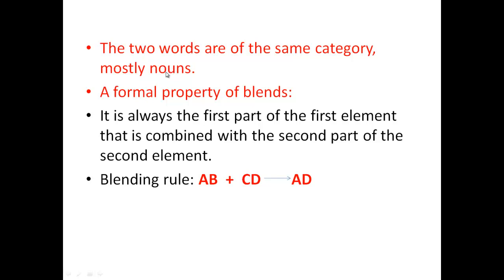We generally combine nouns together in blends. This brings us to a formal property of blends: it's always the first part of the first element that is combined with the second part of the second element. We have a general rule: if the first word is represented as AB and the second word as CD, these are the units belonging to each word.